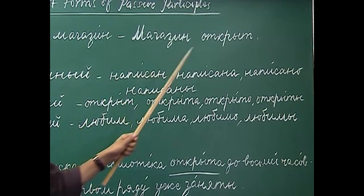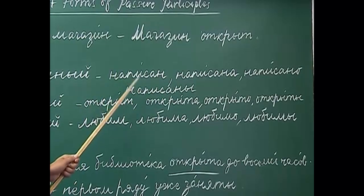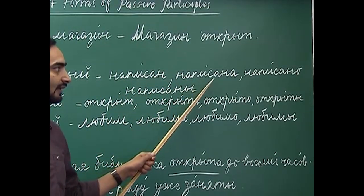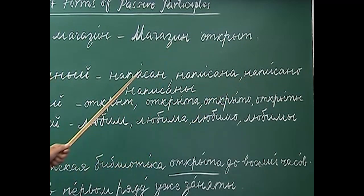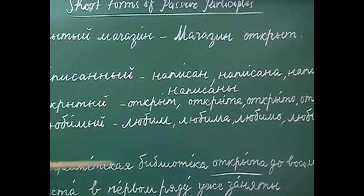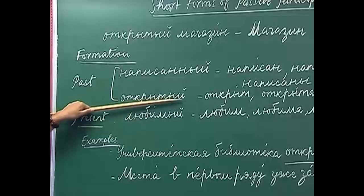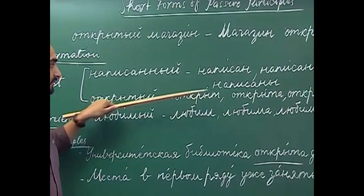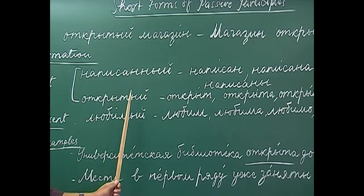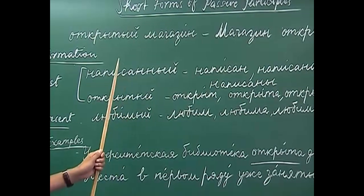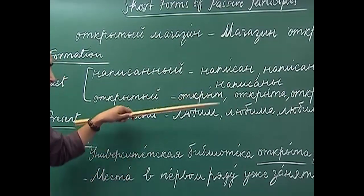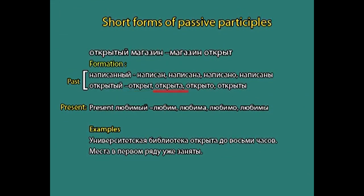There are four forms depending on gender and number: for masculine we have 'napisan', for feminine 'napisana', for neuter 'napisano', and for plural 'napisany'. Similarly, 'otkrytyy' — another past passive participle — you just remove the adjectival ending that was added when forming the passive participle. Add -a for feminine, -o for neuter, and -i for plural. So: 'otkryt', 'otkryta', 'otkryto', 'otkryty'.